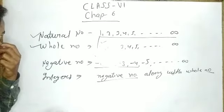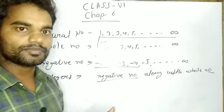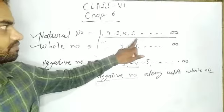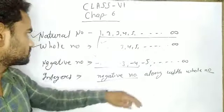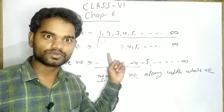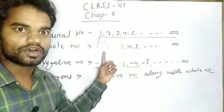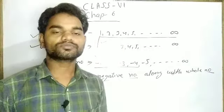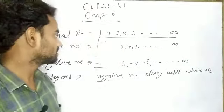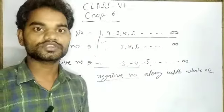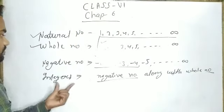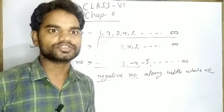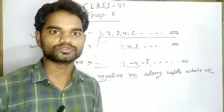Before drawing the number line, let's revise all the definitions. Natural numbers: all the counting numbers up to infinite are known as natural numbers. Whole numbers: all the natural numbers along with 0 are known as whole numbers. Negative numbers: the corresponding opposite numbers of the natural numbers are known as negative numbers. Integers: the negative numbers along with whole numbers is known as integers.